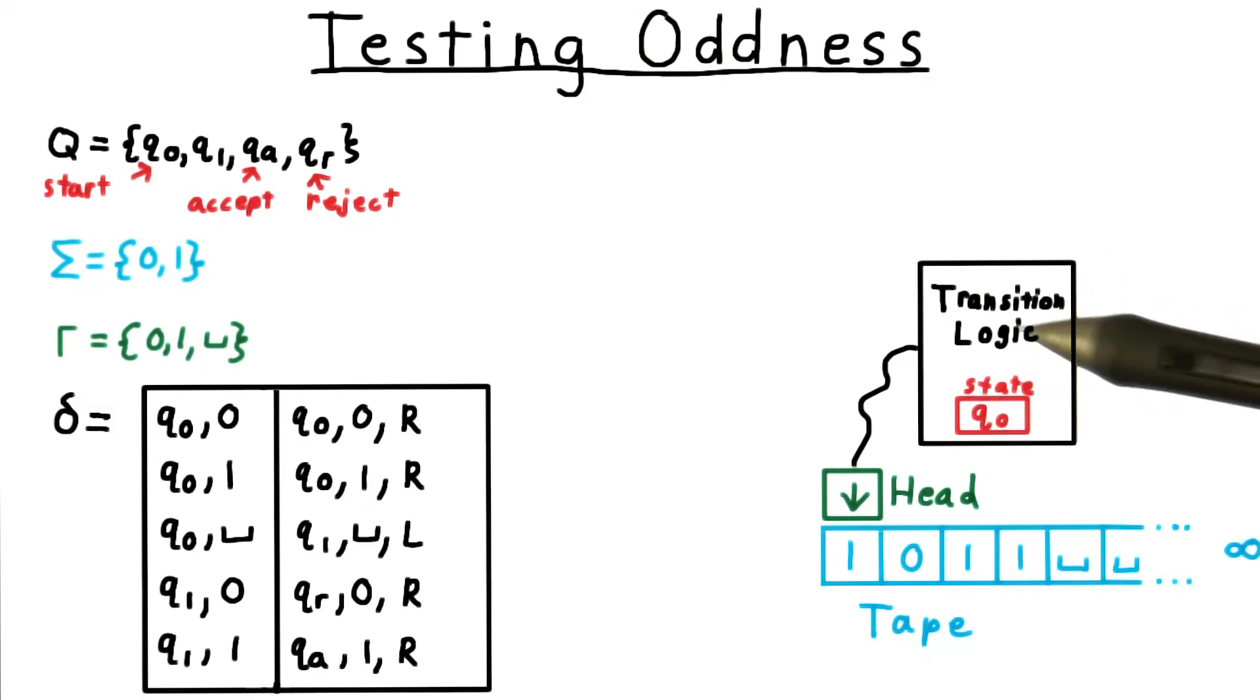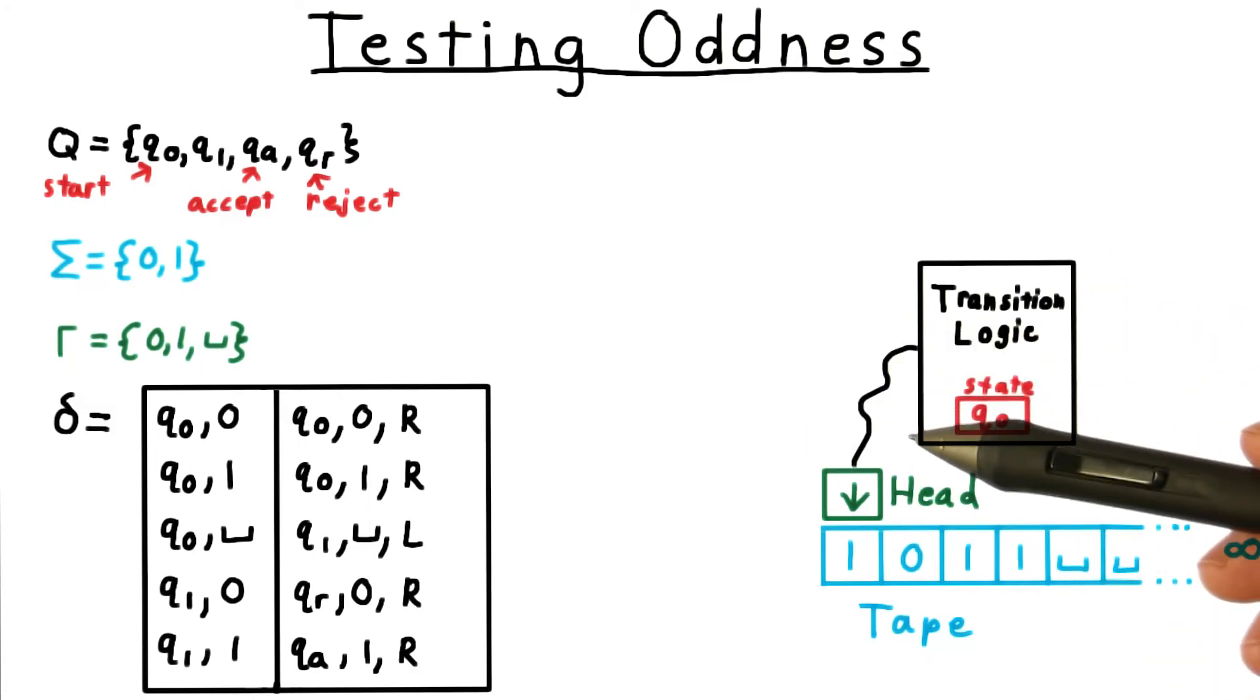For our first Turing machine example, I've chosen one that tests the oddness of a binary representation of a natural number.